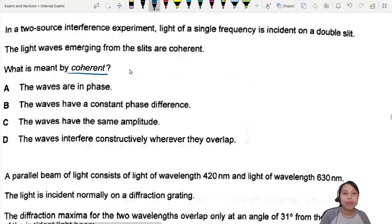This one, I have to remember the definition for it. Okay, definition. Must know. So coherent, it means you have a constant phase difference. So that straight away you can, if you know the definition, then you will be able to identify that this one is B.